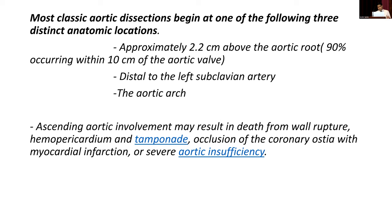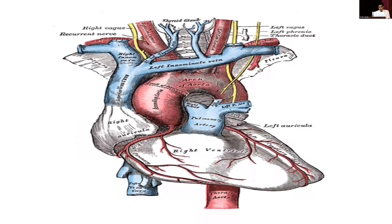The second location is distal to the left subclavian artery, and the third is the aortic arch. The proximal aorta is surrounded by critical structures — the heart, nerves, trachea, esophagus, and major arterial branches — all increasing the possibility of high mortality and morbidity.